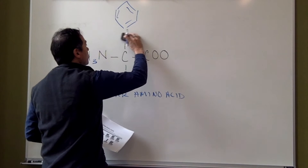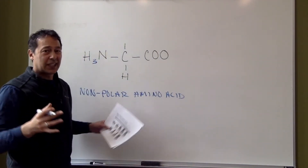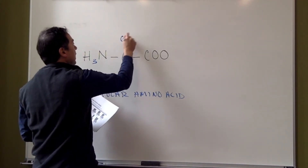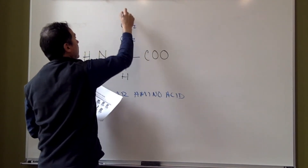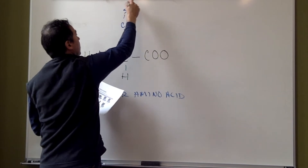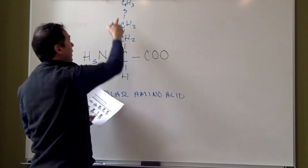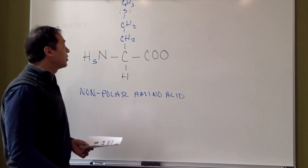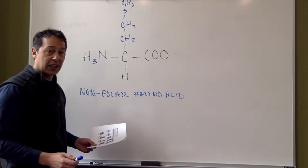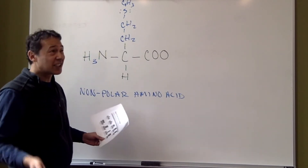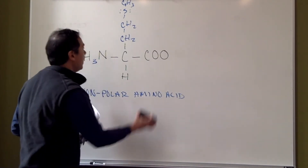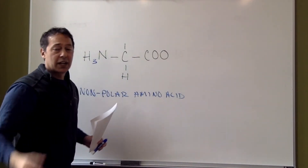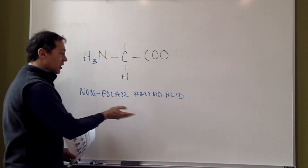In your notes and textbook they do throw a couple in here that are a little bit iffy, kind of on the borderline. One of them contains sulfur: CH2, CH2, then a sulfur, and then a CH3 on top. That sulfur has a couple of lone pairs — it's a little bit polar, kind of in between. The other borderline case is tryptophan. Tryptophan has a nitrogen in it, and nitrogen is electronegative, but they put it with the nonpolar group. What we're really looking for is non-electronegative elements on that R group to give us a nonpolar amino acid.